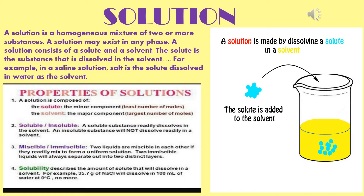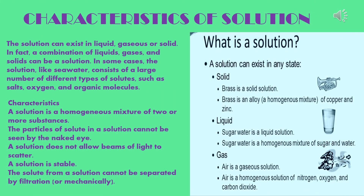Now, examples of some solutions. For instance, air is a homogeneous mixture — it is a solution, gas in gas. The solution can exist in liquid, gaseous, or solid form. In fact, a combination of liquids, gases, and solids can be a solution. In some cases, a solution like sea water consists of a large number of different types of solutes such as salts, oxygen, and organic molecules.